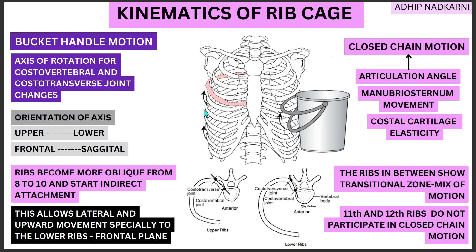Another small point to add is your 11th and 12th ribs, which do not participate in the closed chain motion. Why? Because these are the floating ribs — they don't come and attach to your sternum, and that's why they do not participate in the closed chain motion of your ribcage.